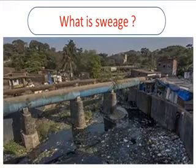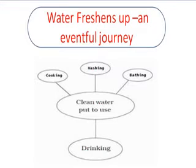Sewage is wastewater released by homes, industries, hospitals, offices, and other users. It also includes rainwater that has run down the street during a storm or heavy rain. The water that washes off roads and rooftops carries harmful substances with it, and these harmful substances are pollutants. Sewage is a liquid waste — most of it is water which has dissolved and suspended impurities.